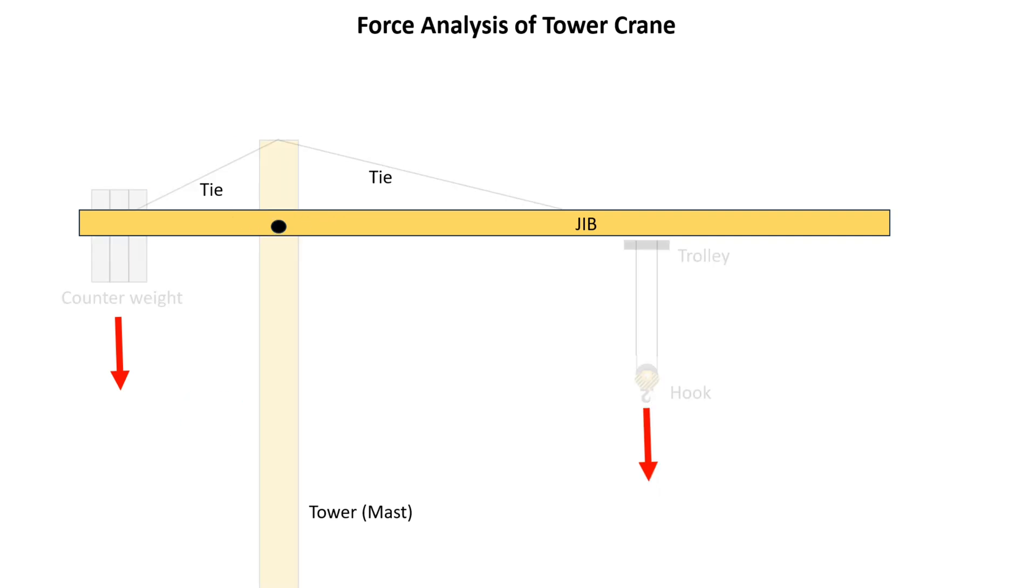Here is the free body diagram of the jib. The green color arrows represent the tension force in the ties, and the blue color arrows represent the reaction forces on the jib.